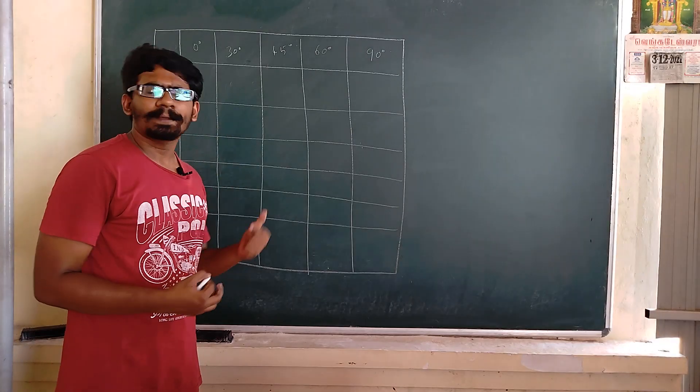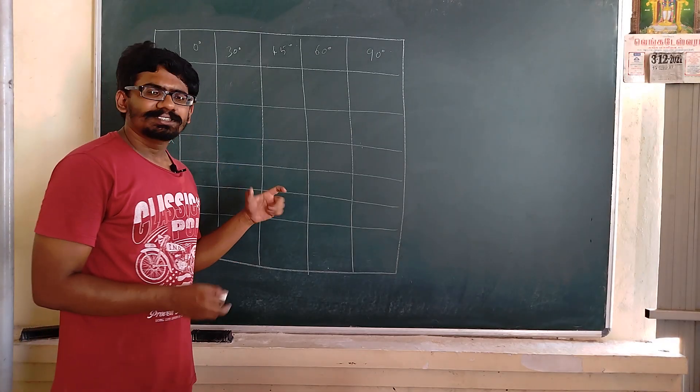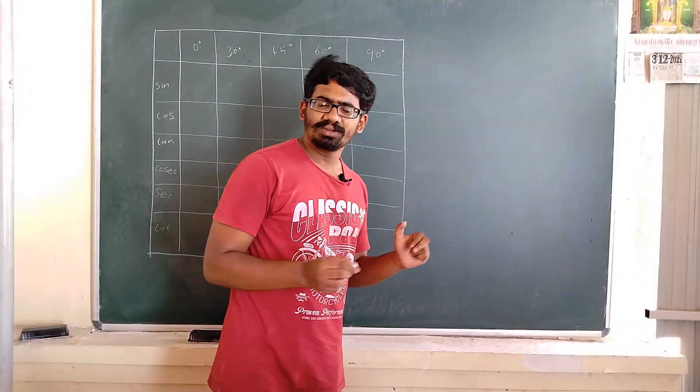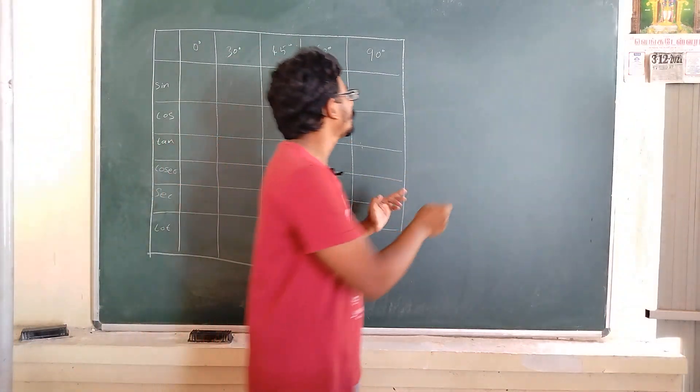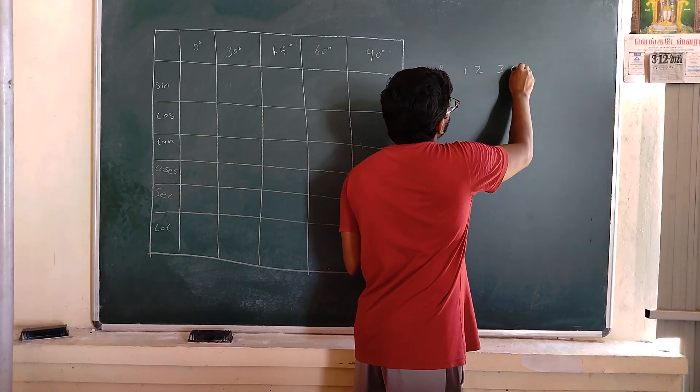You need not recollect the numbers again and again. So how to write this table very easily? First, you have to write or do this in your top column. Write the numbers 0, 1, 2, 3, 4.